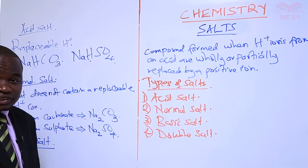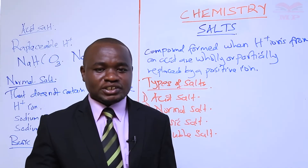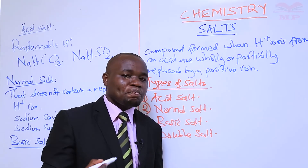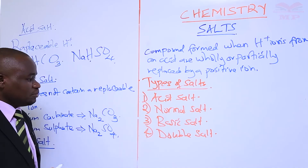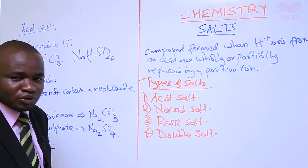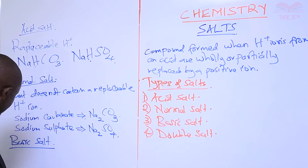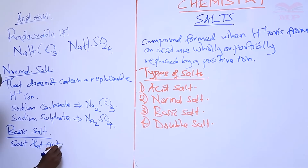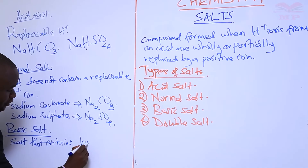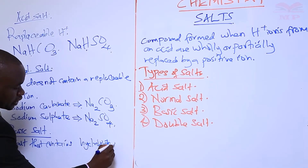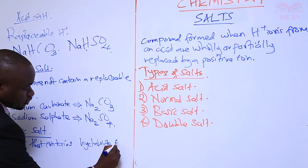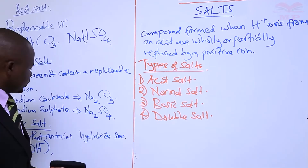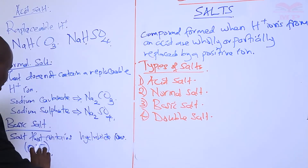In Form 1 we learned about bases and said all bases are identified by the presence of hydroxide ions. For that reason, when defining a basic salt, a basic salt is the one that contains a replaceable hydroxide ion. So a basic salt is a salt that contains hydroxide ions. Basic salts are identified by the presence of hydroxide ions.